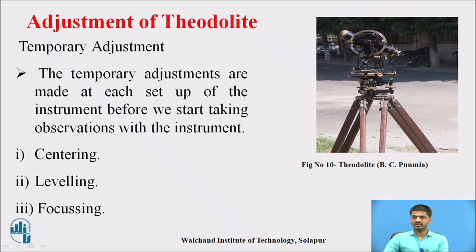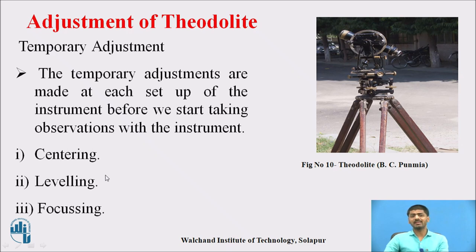First, set up the tripod, then mount the instrument over it and carry out the centering process — using a plumb bob or the object glass to identify the centering point on the ground. After centering, proceed to leveling: use two foot screws to bring the plate level bubble tube exactly to the central position. Finally, use the eyepiece and object glass to adjust the parallax — this process is known as focusing.